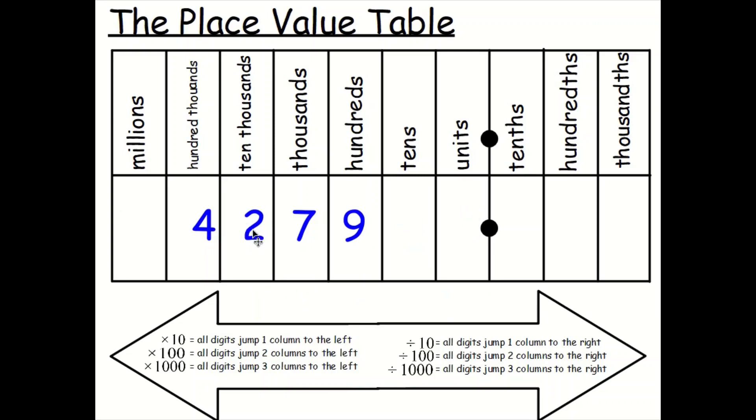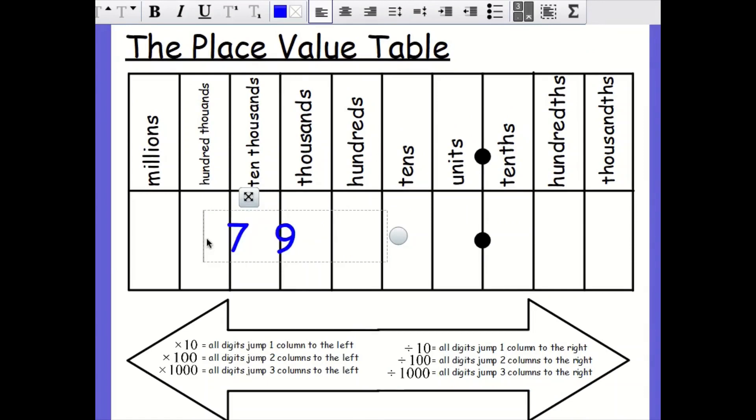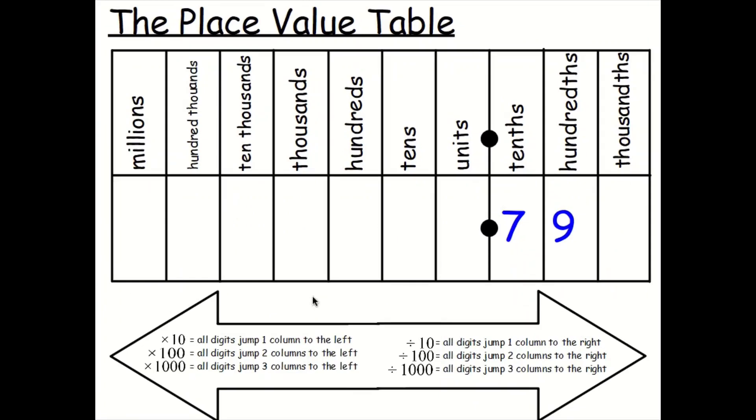I'm going to change the number a little bit now. So I'm going to say just these two digits here. So what would you normally have to do here? You'd normally have to put a zero here. So this is 0.79 now. What happens if I multiply that by 10? I just jump one column to the left. So everything goes into here now, and we can rub out that zero. So what's our new number? Our new number is 7.9.